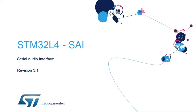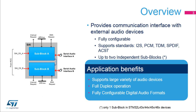Hello and welcome to this presentation of the STM32 Serial Audio Interface. I will present the features of this interface which is used to connect external audio devices. The Serial Audio Interface, or SAI, is integrated in STM32 products to provide an interface for communicating with external audio devices such as amplifiers, ADCs, DACs, audio codecs, and audio processors.